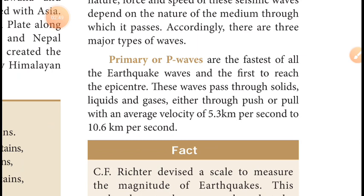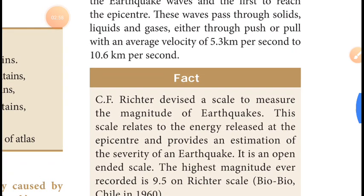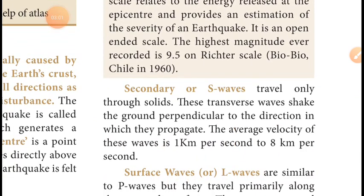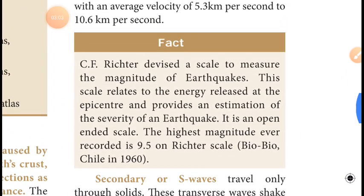There are three types of seismic waves: primary wave, secondary wave, and one more wave. Before going to secondary waves, one important piece of information — Richter devised a scale to measure the magnitude of earthquakes. The Richter scale is related to the energy released at the epicenter and provides an estimation of severity.